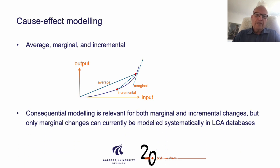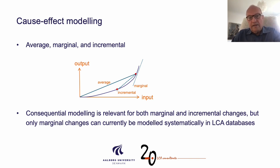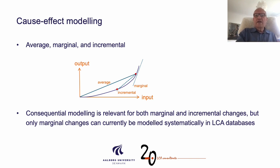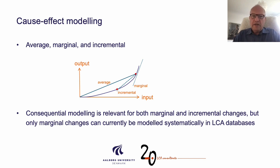Consequential modeling is relevant for both marginal and incremental changes, but only marginal changes can currently be modeled systematically in an LCA database. That is because in a marginal situation, whether you increase or decrease, it'll be the same activities that are always affected. But when you have larger changes, you cannot always predict in advance what size that change will have and therefore the slope of the curve, so that will have to be modeled individually in every case.